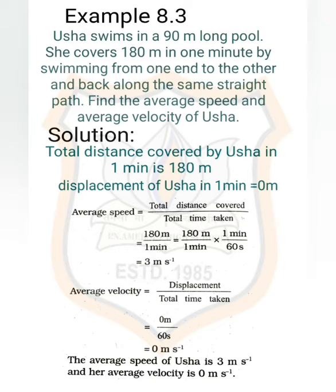The total distance covered by Usha in one minute equals 180 meters. Since it is a 90-meter long pool, from the starting point to the ending point she covers 90 meters, and back to the starting point another 90 meters — total 90 + 90 = 180 meters. However, the displacement of Usha in one minute is 0, because she travels 90 meters forward and then 90 meters back in the opposite direction, so displacement = 90 − 90 = 0.